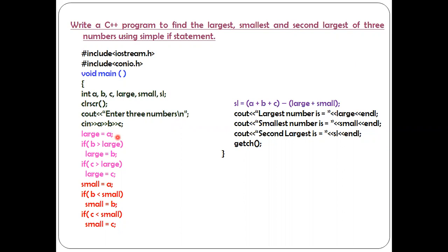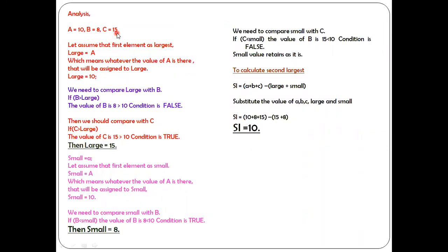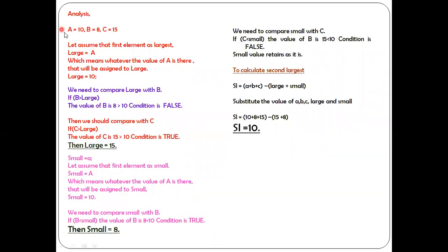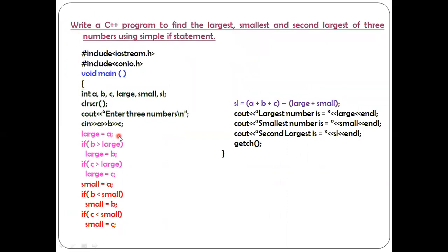Next, large is assigned to a. Before this, I need to input three values — for example, 10, 8, and 15. 10 is stored in a, 8 is stored in b, and 15 is stored in c. So large equals a, and the value of a is 10, so large equals 10. We are assuming that the first element itself is the largest, but we still need to compare with b and c. Then comes the condition: if b is greater than large.